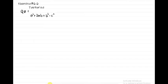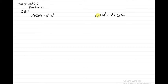Exercise 6.6, factorize. Question number 1: A² + 2AB + B² - C². We can group the first three terms using the (A+B)² formula, giving us (A+B)² - C². Then applying the difference of squares formula — (A+B)² - C² = (A+B+C)(A+B-C). That is the answer.